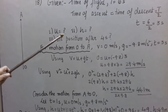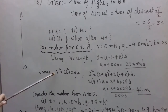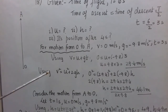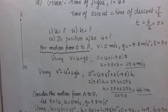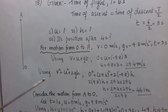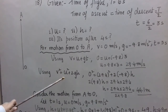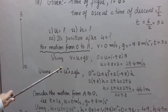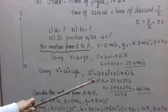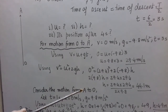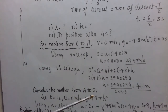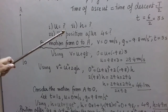For maximum height, we use the third equation of motion: v² = u² + 2gh. Putting v = 0, u = 29.4, g = −9.8, we calculate h to be equal to 44.1 meters. This is the maximum height reached by the ball.